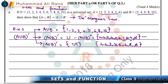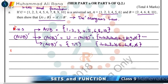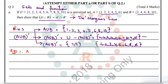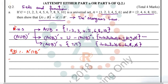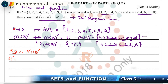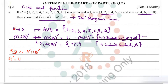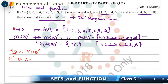This is the result of the left-hand side of De Morgan's Law. Now let's solve the right-hand side, which is A' ∩ B'. First, we find A complement by subtracting set A from the universal set.